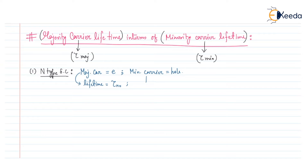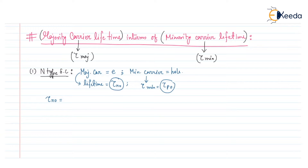Similarly, for the minority carrier hole, we can say that Tau_Minority can be written as Tau_p0. Now we want to express Tau_n0, that is the majority carrier lifetime, in terms of Tau_p0. We know that for an n-type semiconductor, the electron lifetime Tau_n0 can be written as the electron concentration divided by the hole concentration, multiplied by the minority carrier lifetime Tau_p0.